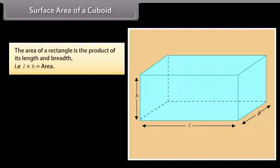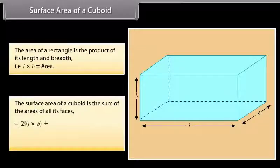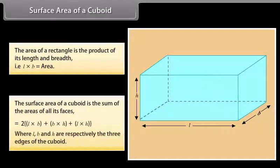We already know that the area of a rectangle is the product of its length and breadth, that is L × B = area. Therefore, the surface area of a cuboid is the sum of the areas of all its faces, which is equal to 2(LB + BH + LH), where L, B and H are respectively the three edges of the cuboid.